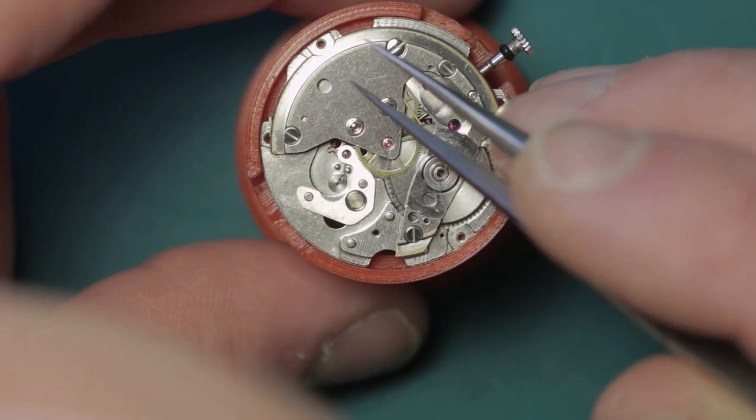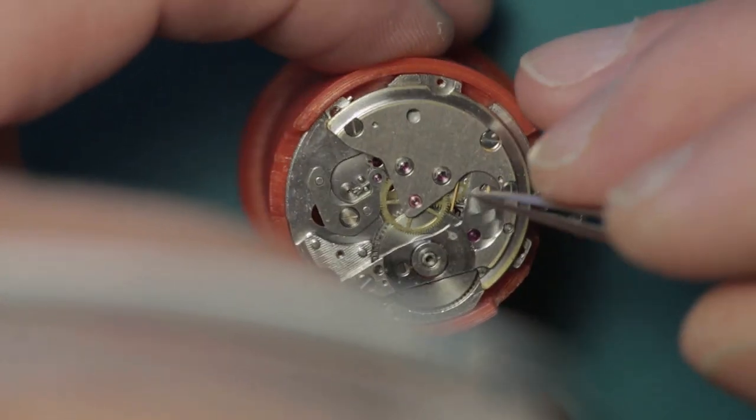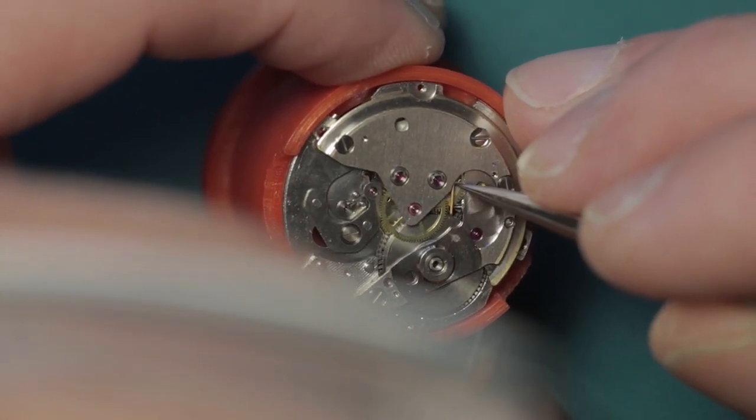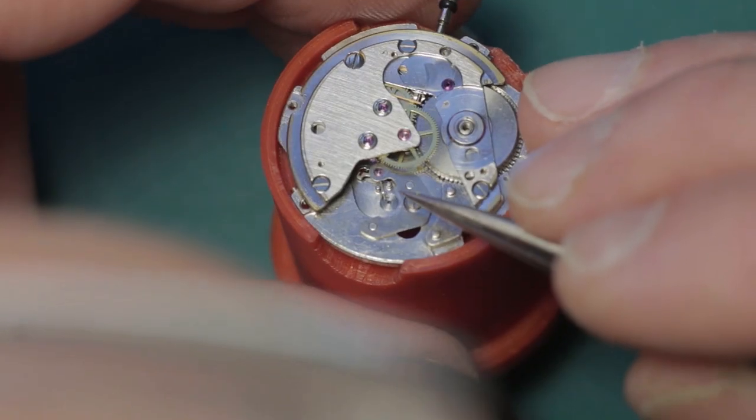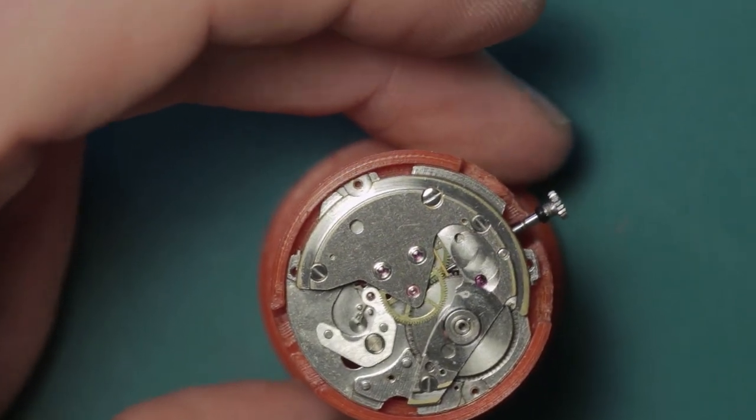While I have access, I'm just going to go ahead and check the end play of the fourth wheel. There you can see the hack for the hacking mechanism just here. I'm also going to check the third wheel - that seems okay - and the escape wheel after I've removed the pallets.